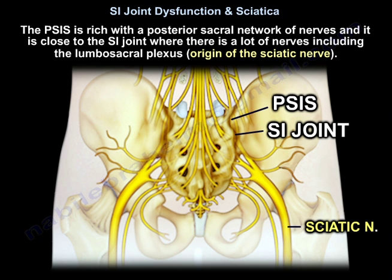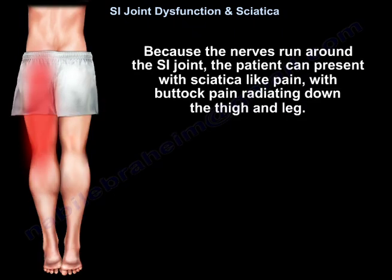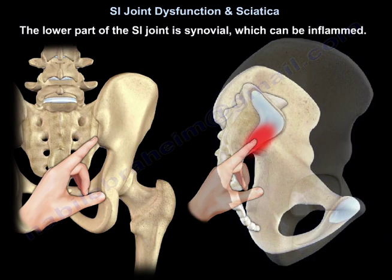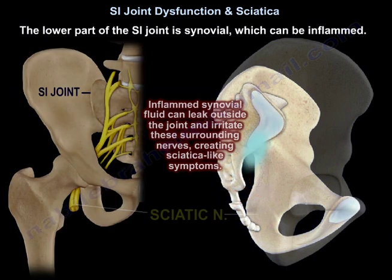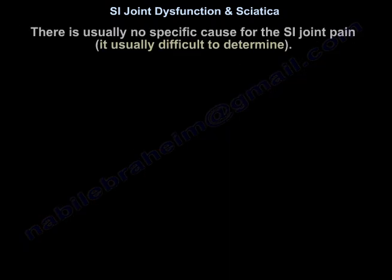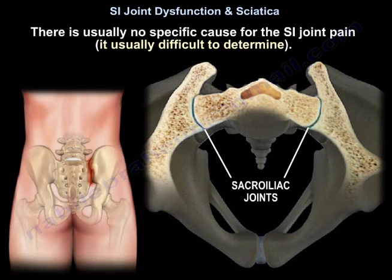The posterior superior iliac spine is rich with a posterior sacral network of nerves and is close to the sacroiliac joint, where there are many nerves including the lumbosacral plexus, which is the origin of the sciatic nerve. Because the nerves run around the sacroiliac joint, the patient can present with sciatica-like pain with buttock pain radiating down the thigh and the leg. The lower part of the sacroiliac joint is synovial and can become inflamed; this inflamed synovial fluid can leak outside the joint and irritate the surrounding nerves, creating sciatica-like symptoms.